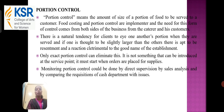The next topic is portion control. It means the amount or size of a portion of food to be served to a customer. Food costing and portion control are implemented together, and the need for this form of control comes from both sides of the business — from the caterer and the customers. There is a natural tendency for clients to compare one another's portions when they are served; if one is seen to be slightly larger, the other is apt to be resentful. Only exact portion control can eliminate this. Monitoring portion control can be done by direct supervision, by sales analysis, and by comparing the requisitions of each department with issues.